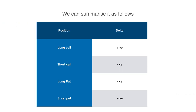Hence we can summarize the following. The delta of a long call will be positive, whereas the delta for a short call will be negative. This is because if the underlying price increases, the value of the call also increases. But since you have sold the call, you will be incurring losses as the value of call increases due to increase in the value of stock — meaning if the stock goes up, your payoff actually becomes a loss, hence the delta is negative. Similarly, the delta for a long put will be negative, while the delta for a short put will be positive.